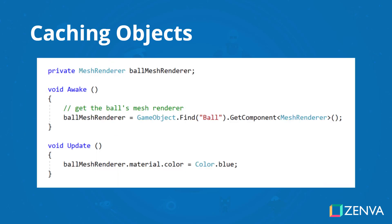We can create a private variable for that ball mesh renderer, and in the Awake function, that is where we will call the gameObject.find function to find the ball object and get the mesh renderer component. This would greatly reduce the amount of time it takes to run the Update function, as we are only calling gameObject.find and getComponent for the ball once in the whole game, whereas before we were calling it around 60 times a second at 60 FPS on mobile.